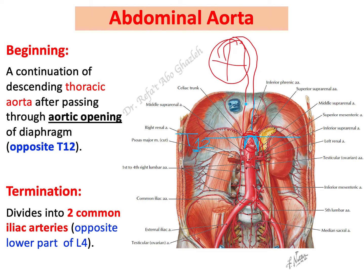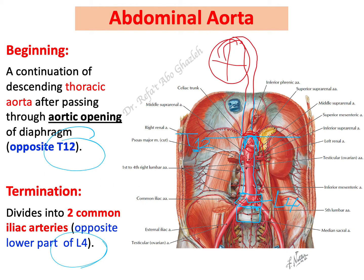At this point the thoracic aorta becomes the abdominal aorta. The abdominal aorta starts at T12 and terminates at the level of L4 — lumbar vertebra number four. You can see lumbar vertebra four and lumbar vertebra five in the illustration.